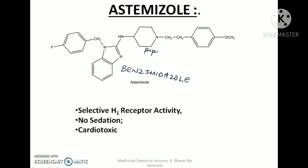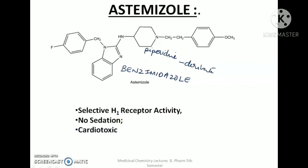The third example of a second generation antihistaminic agent is astemizole. It is a piperidyl benzimidazole derivative. It is a selective H1 receptor antihistamine with no sedation, but since it is cardiotoxic, it is no longer in use today.